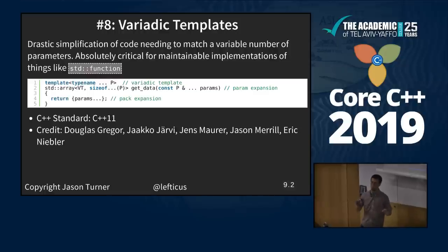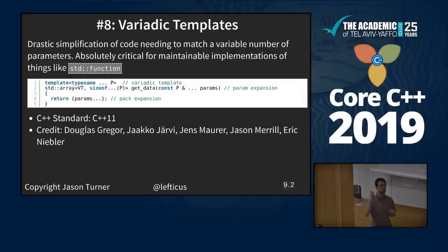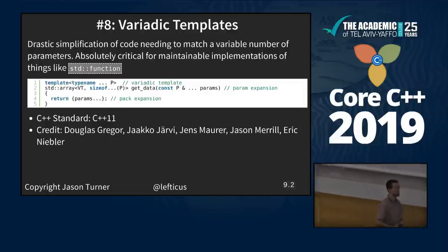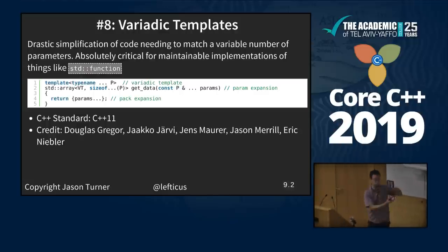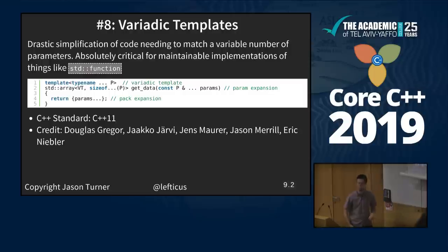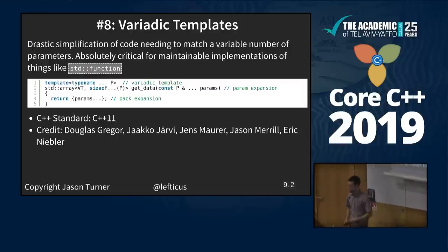Has anyone ever looked at the implementation of boost::function pre-C++11? Completely unmaintainable — 15 or 20 different copy-pasted functions, only because they didn't want the compile-time overhead of using Boost.PP. I've written code like that in my scripting engine that is now three lines of code because of variadic templates. Douglas Gregor, Jaakko Järvi, Jens Maurer, Jason Merrill, Eric Niebler come up on these features.